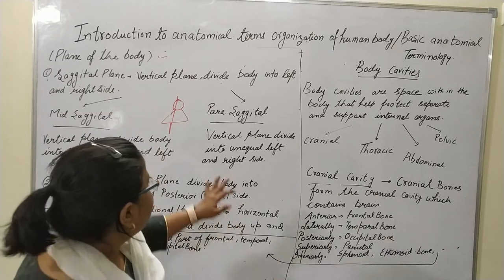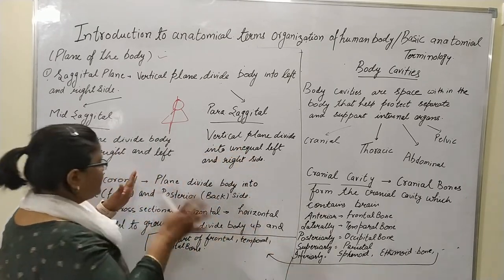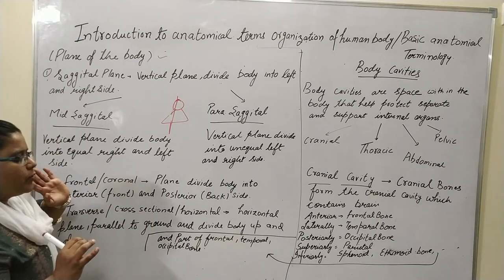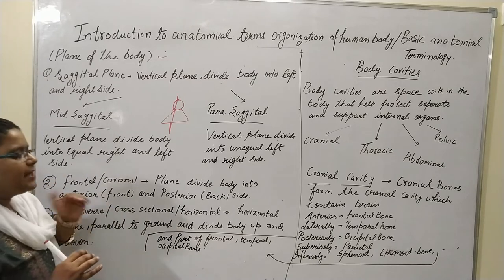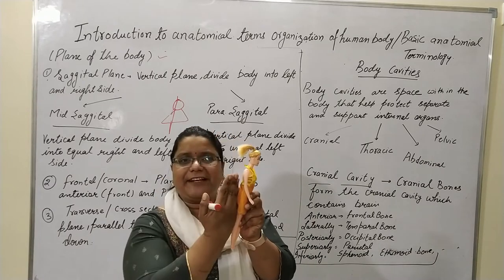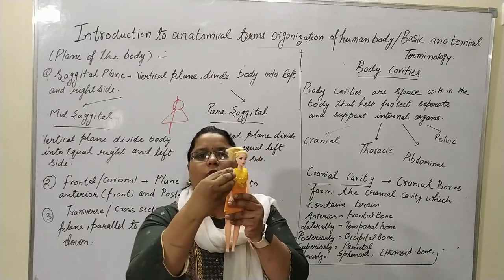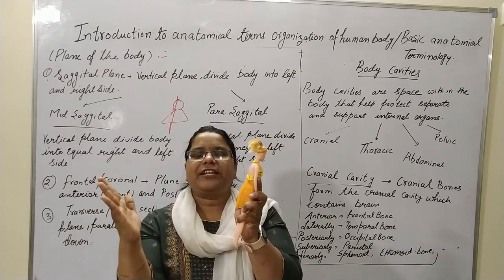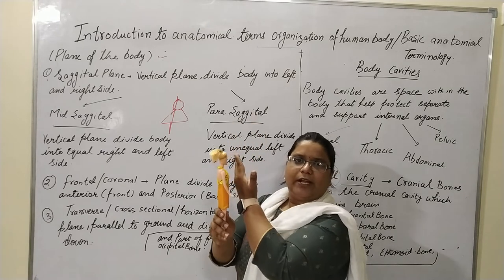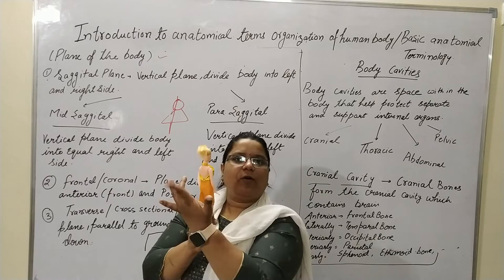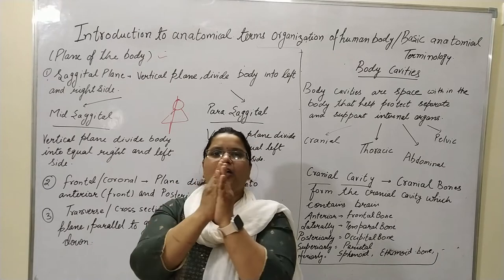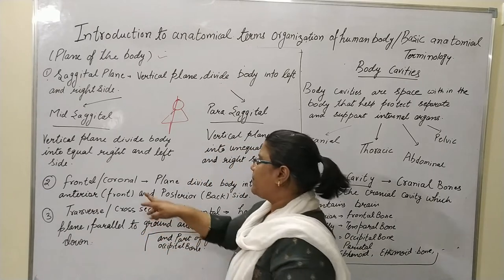So the sagittal plane is a vertical plane which divides the body into left and right. After that, we have the frontal plane or coronal plane. This plane divides the body from the anterior and posterior side. If we divide the body this way, it will become one part of the anterior and one part of the posterior. That is the frontal plane or coronal plane.